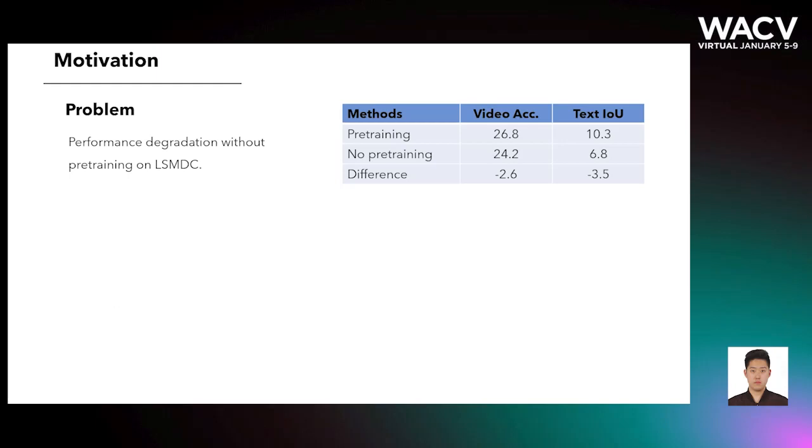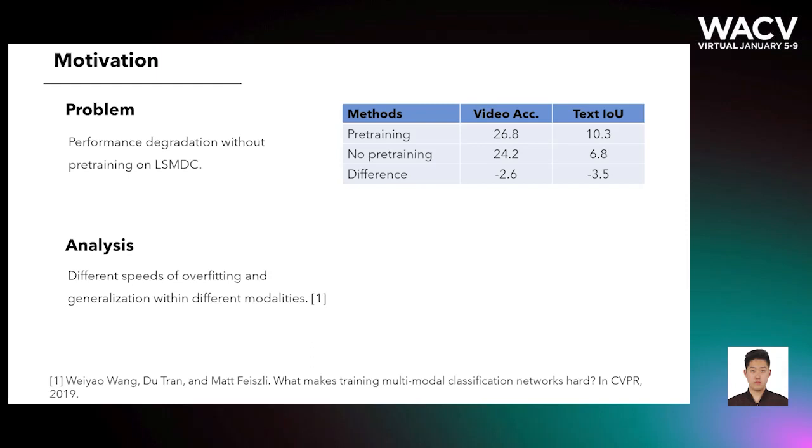For multimodal learning, pre-training on large data is usually useful. In the past, we pre-trained the video and textual sequence encoders using the large dataset LSMDC. Without the pre-training, we experienced significant performance degradation.